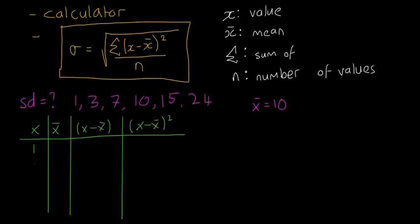So we're going to have 1, 3, 7, 10, 15, and 24. It all just about fits in. The mean x-bar stays as 10 the entire time. So these are all the different values of x. This x-bar doesn't change.